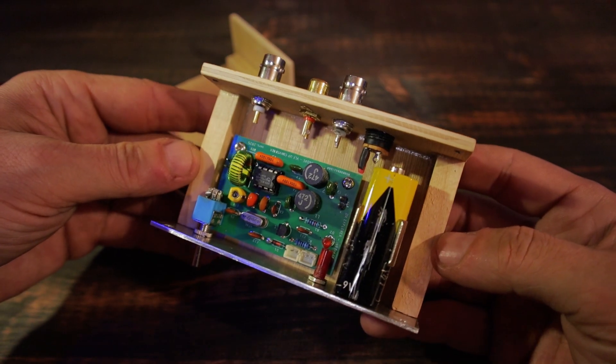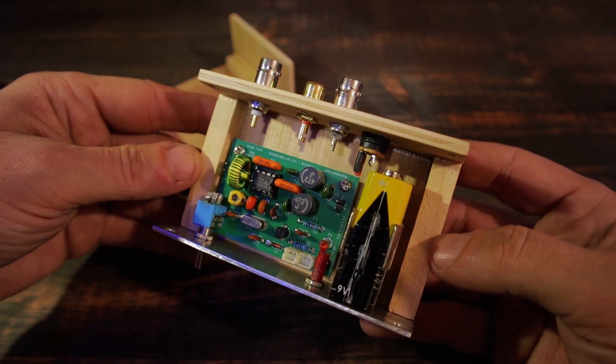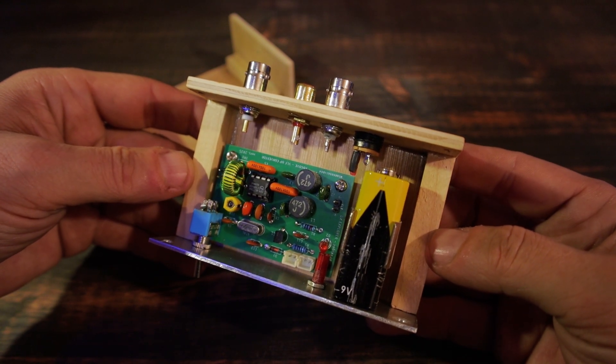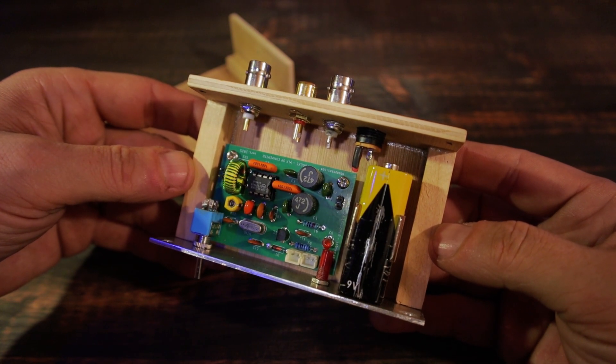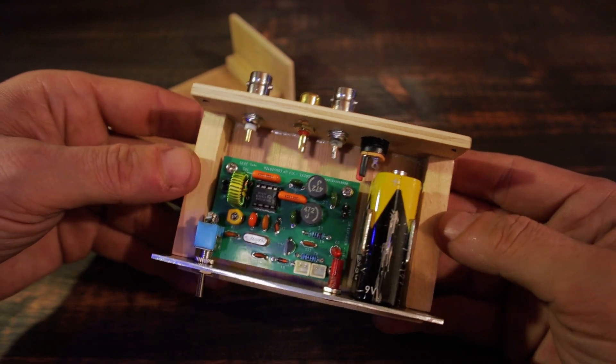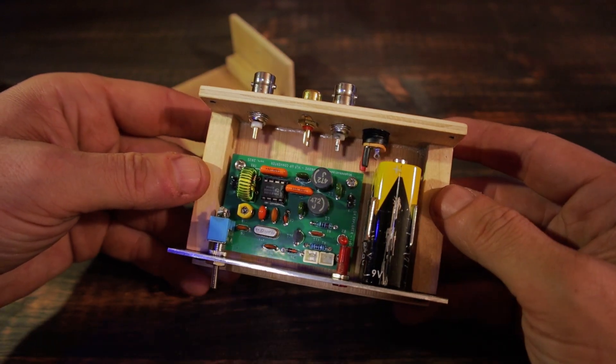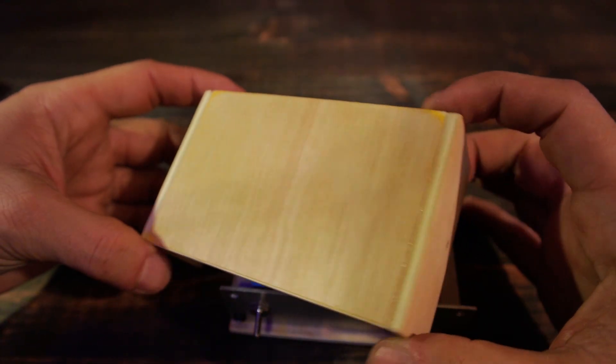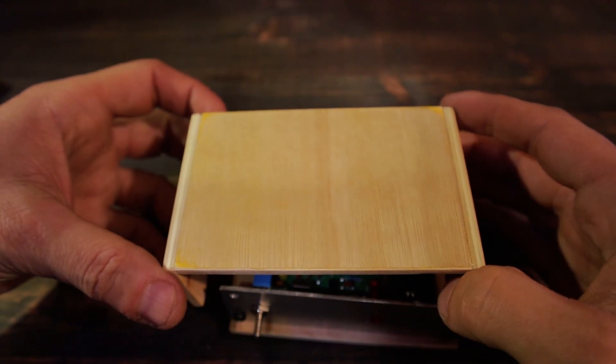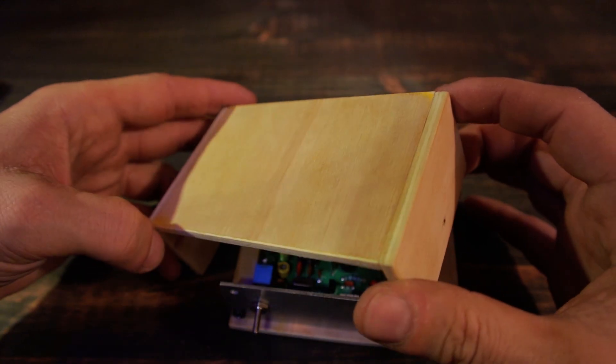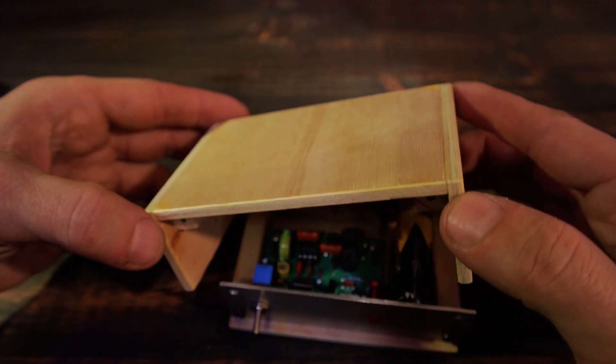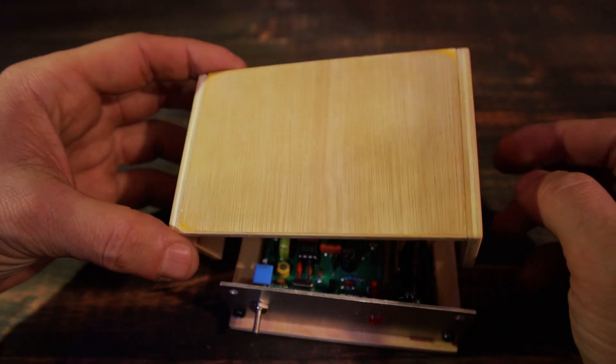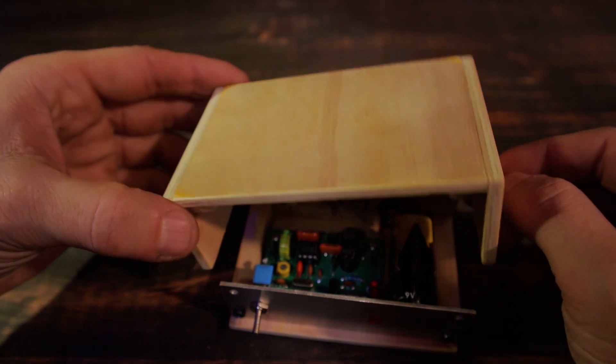So yeah, everything fits. Now basically all I have to do is just to finish up the wiring. But before I'm finishing the wiring, I'm going to remove everything and do some final beautifying touches on the wood, probably with some flame torch and after that, maybe a little color and some oil. It should make it look good enough.